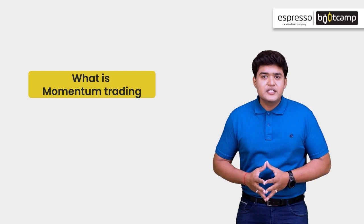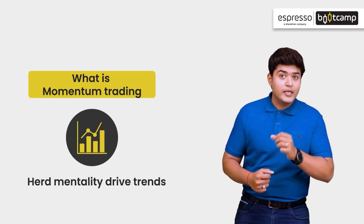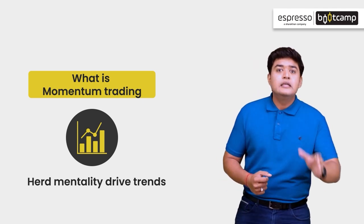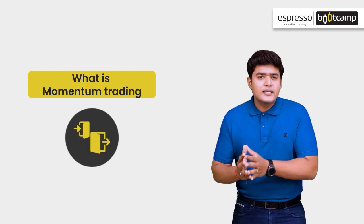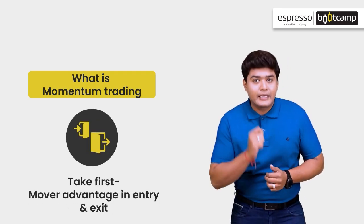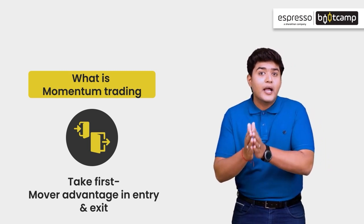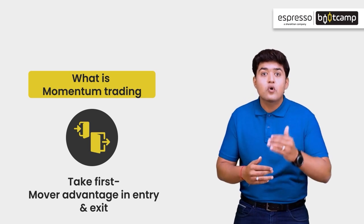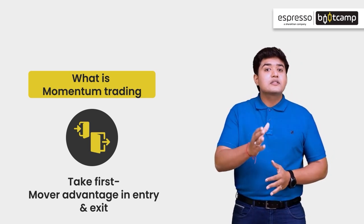Momentum trading strategy mein hum aise stock kharid te hai jis mein kaafi buying ho rahi hai. Jab tak prices rise kerte rehet hai, hum is trade mein invested rahenge. Hum tab exit karenge jab momentum weak ho jai aur price peak karne laghe. So basically, this strategy involves buying a stock that has shown a significant momentum in price or volume.